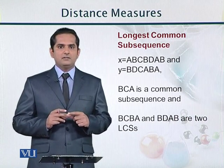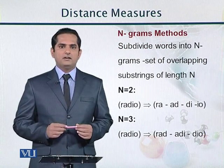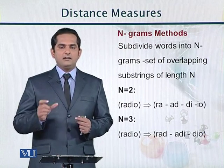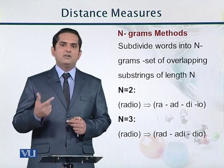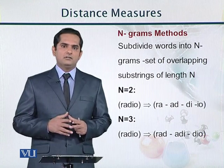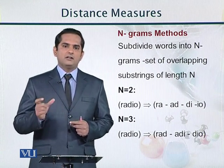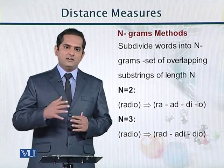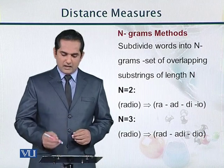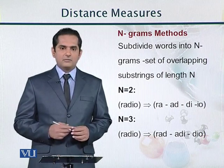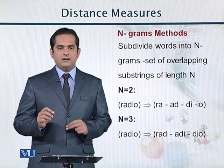The longest common subsequence can have gaps within its definition. The third model is n-grams, taken from text processing. Here n is the total number of characters and grams are the characters themselves. For example, a unigram means one character, bigram means two characters, trigram three characters, and so on. If I take the word 'radio' and convert it into bigrams, that would be ra, ad, di, and io. For trigrams it would be rad, adi, and dio.